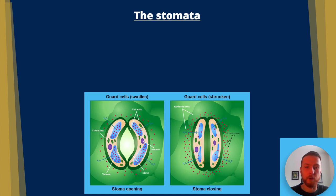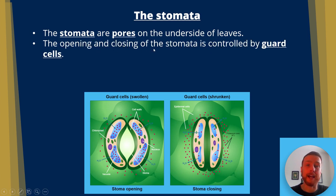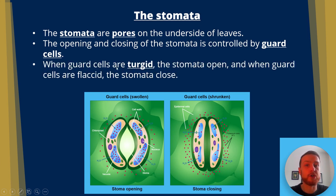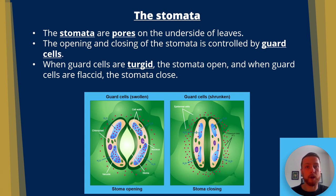The stomata are pores on the underside of leaves. The opening and closing of the stomata is controlled by guard cells, either side of the stomata. When guard cells are turgid — meaning full of water — the stomata open, and when guard cells lose water, the stomata close. When the stomata are open, water loss can occur from the plant at a high rate. When the stomata are closed, the plant conserves water.